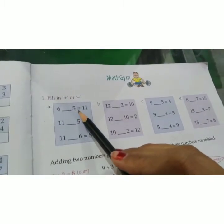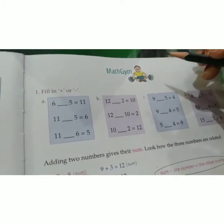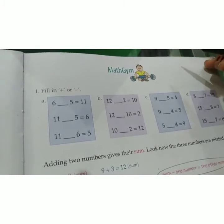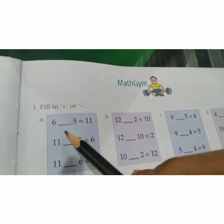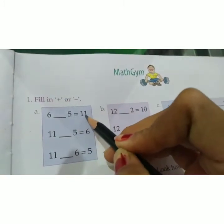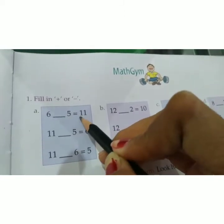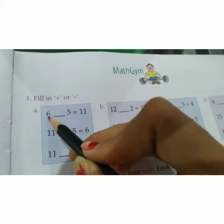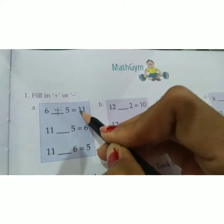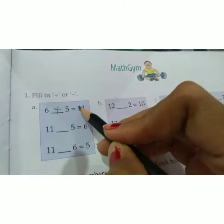6 and 5 equal to 11. In this concept, you have to put the symbol of plus or minus. You will find out how to find the symbol. See — if you put the symbol of minus, then 6 minus 5 is 1, but the answer is 11. So, 6 plus 5 equals 11. The sum of 6 and 5 is 11.